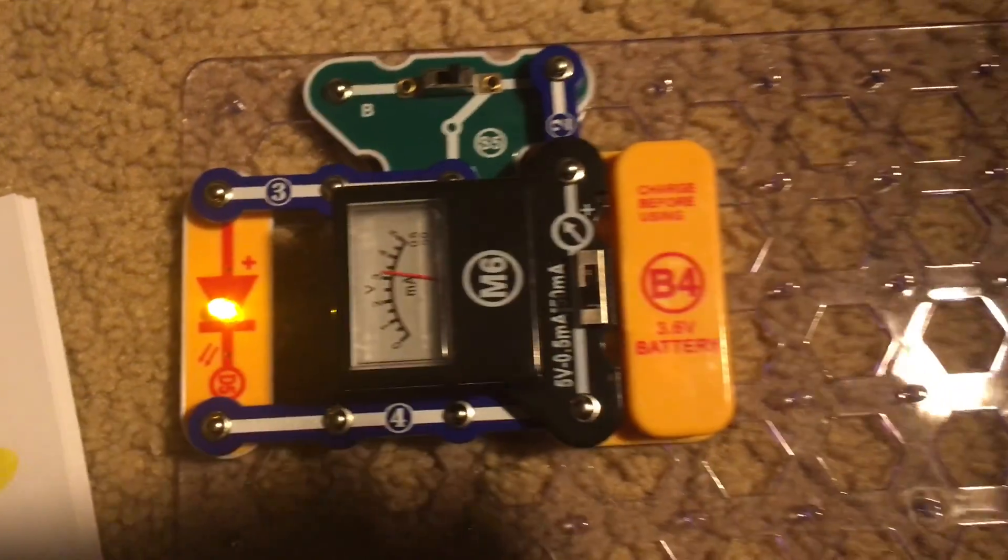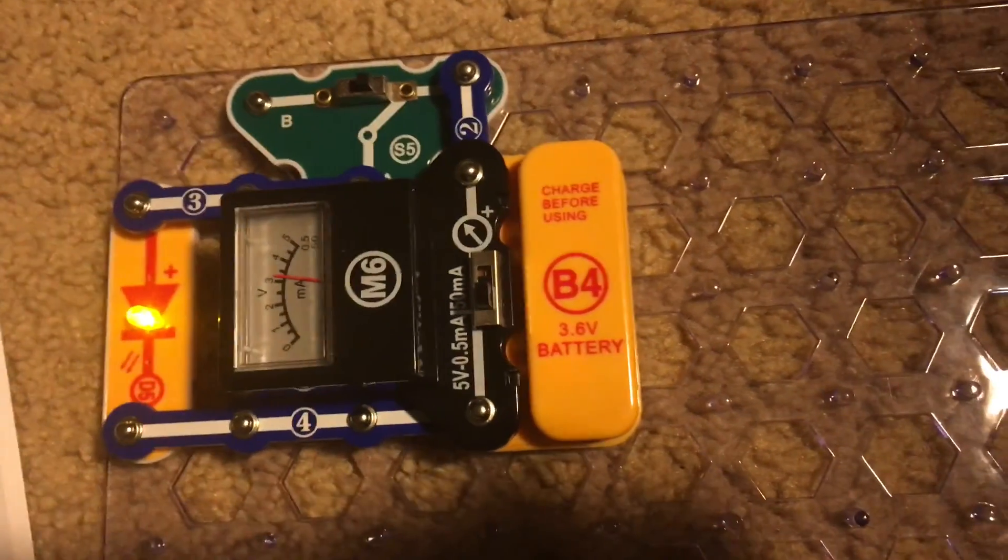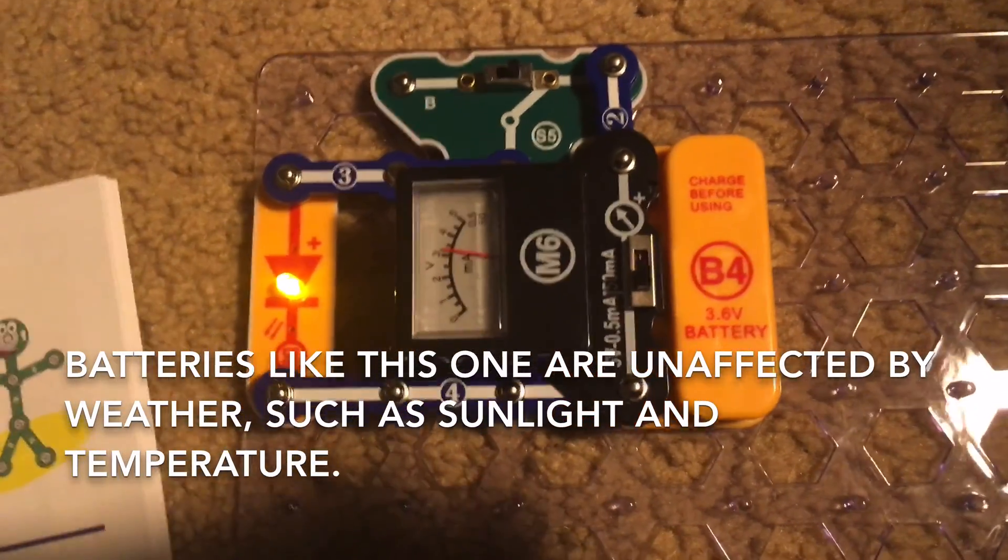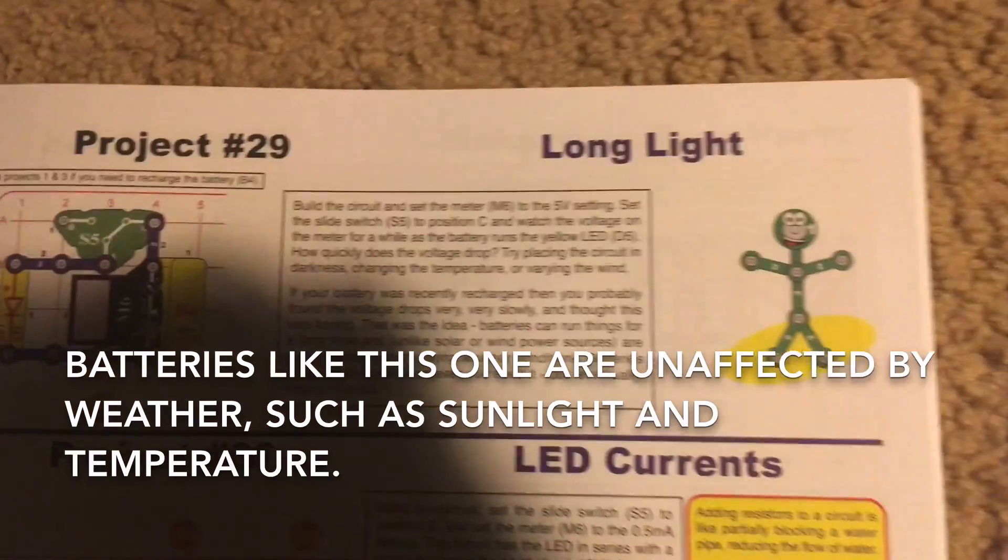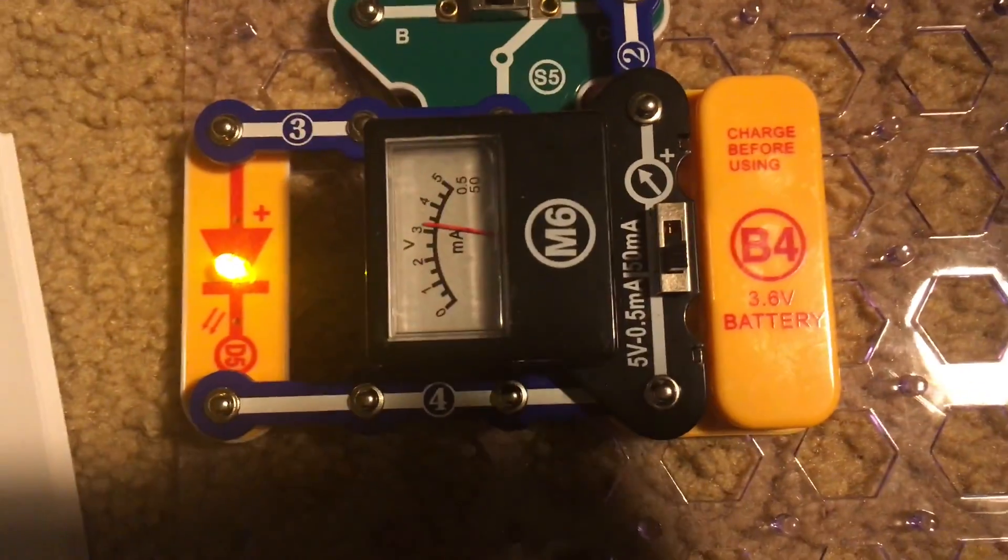This project teaches that batteries can run devices for incredibly long periods of time even though they will eventually run out. Batteries like this one are hardly affected by changing weather. I'm not going to do it obviously, but you can try putting the circuit in darkness, change the temperature, or vary the wind.